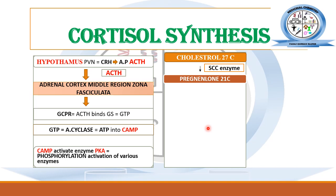After that, the enzyme 3-beta-hydroxysteroid dehydrogenase acts on pregnenolone and converts it into progesterone. In terms of chemical structural changes: at the third position, the hydroxyl (alcohol) group is oxidized into a ketone, and there is a shift of the double bond from position five to position three.